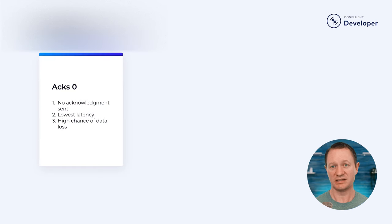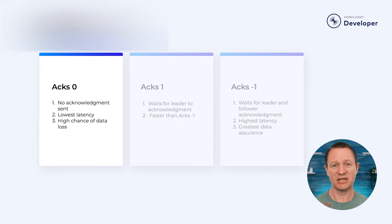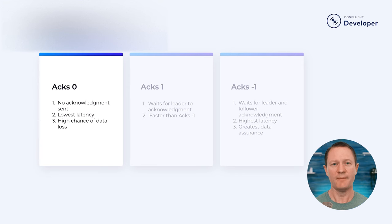There's one more crucial decision you need to make when writing a producer: how does a producer know if the messages have been delivered? For that, we have producer acknowledgement, or ACKs for short — in other words, how important is it that your messages arrive? There are three options to choose from: ACKs 0, ACKs 1, or ACKs -1. ACKs 0, as the name implies, is none — the messages are sent without the producer waiting to see if they ever arrive in your Kafka cluster. This provides the lowest latency, but there is a good chance that you will lose data.